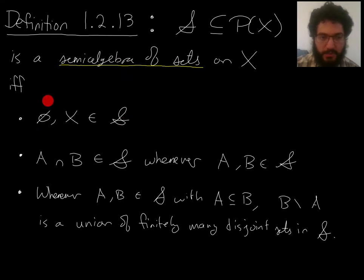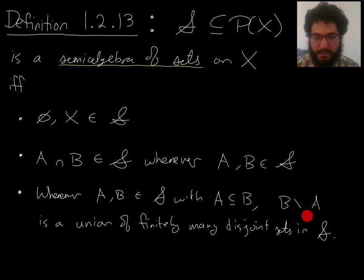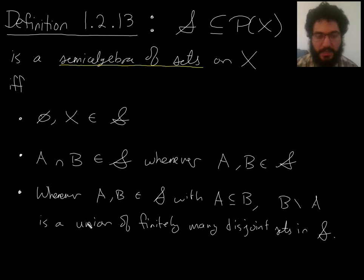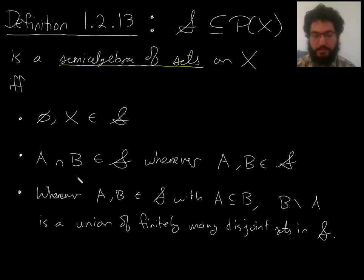We call it a semi-algebra of sets on X if it contains the empty set and the full set, and it is closed under intersections. Now, if I just went and said closed under complements, then I'd be defining an algebra of sets all over again — because if it's closed under complements and closed under intersections, then by De Morgan's law it's automatically closed under unions.